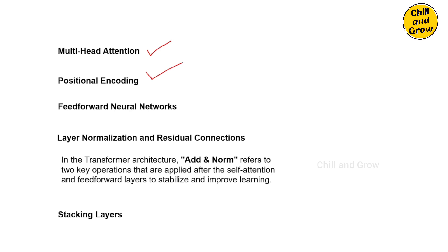Next is feed forward neural networks. After the self-attention step, the output is passed through a simple feed forward neural network. This is a regular neural network, and each word's representation is processed independently — each word goes through its own unique network. That is feed forward neural networks.